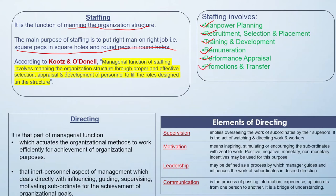Staffing involves activities like manpower planning, recruitment, selection, placement, training and development, remuneration design, promotions, transfers, and performance appraisals. As per Koontz and O'Donnell, the managerial function of staffing involves manning the organization structure through proper effective selection, appraisal, and development of personnel to fill the roles designed in the structure.